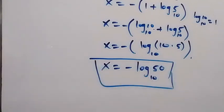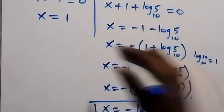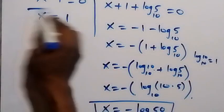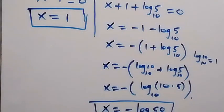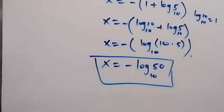So the second value of x is negative log 50 base 10, and the first value is x equals 1. We have come to the end of this solution. Thank you for watching. Please subscribe to my channel, turn the notification bell on, and share this video. See you next class, bye for now.